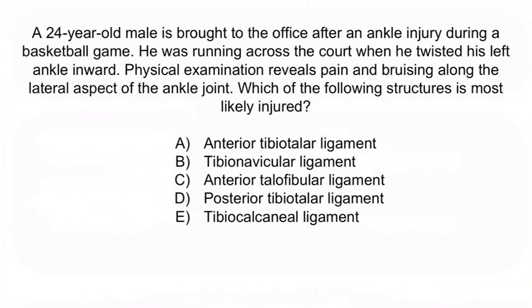Hopefully from the question stem you notice that this patient twisted his left ankle inward — in other words, he inverted his left ankle. This, as well as pain along the lateral aspect of the ankle joint, is a classic presentation of an anterior talofibular ligament injury. So the correct answer is C, anterior talofibular ligament.